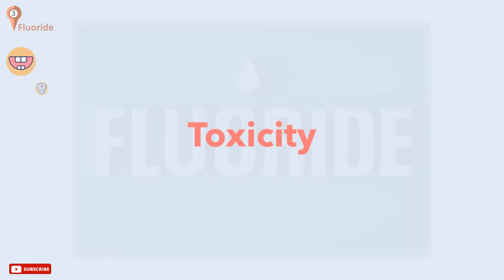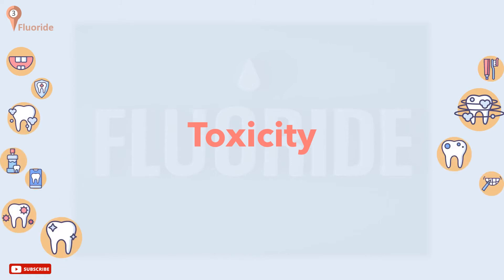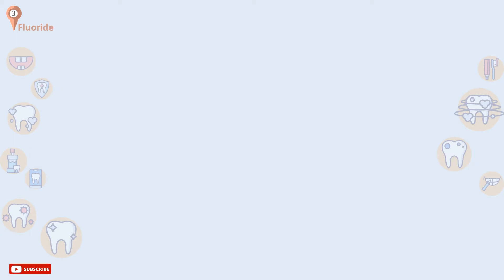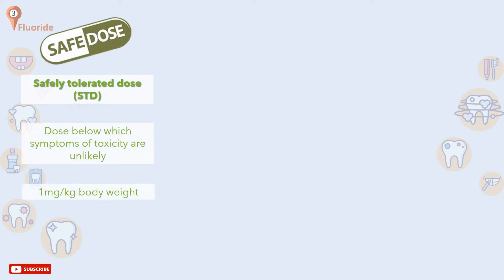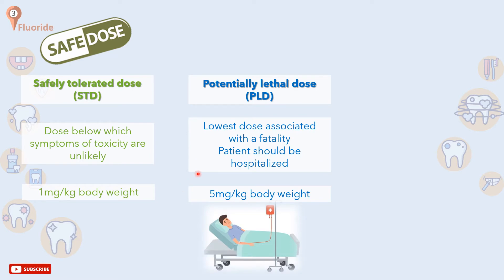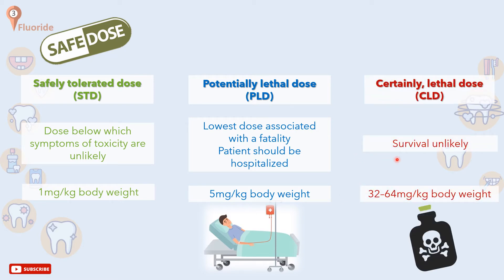Now we will discuss the doses of fluoride that the body can deal with. The safely tolerated dose is the dose below which symptoms of toxicity are unlikely, and it is about 1 mg of fluoride per kilogram of body weight. The potentially lethal dose is the lowest dose associated with fatality, starting at 5 mg of fluoride per kilogram of body weight. The certainly lethal dose is one where survival is unlikely, ranging between 32 to 64 mg of fluoride per kilogram of body weight.